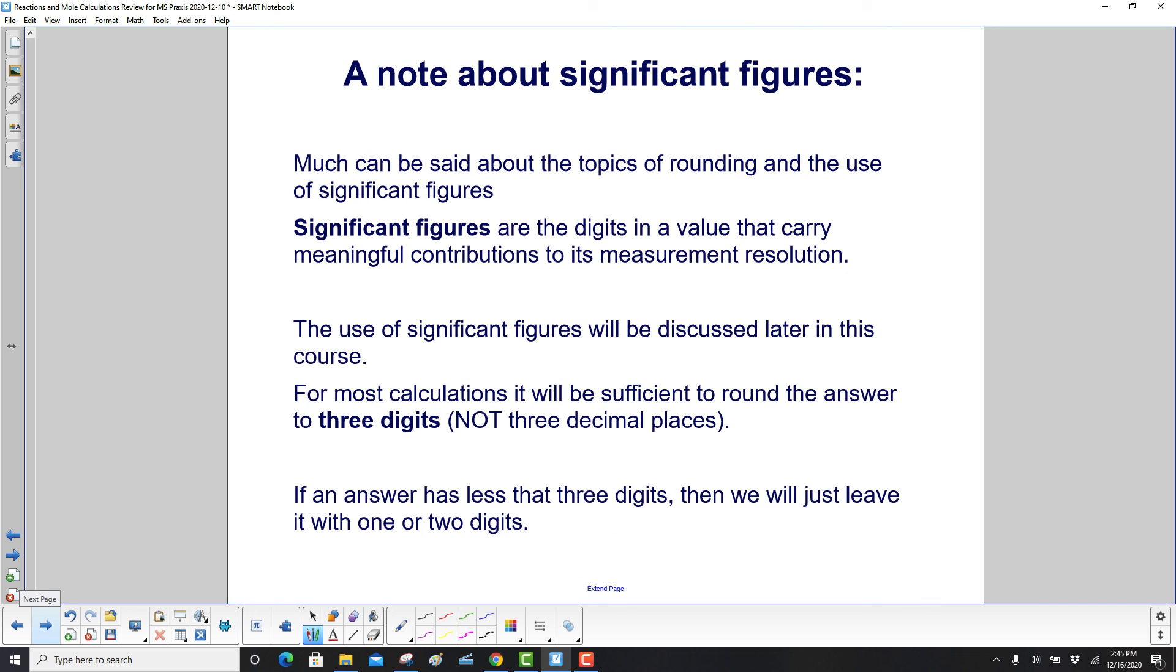Much can be said about the topics of rounding and the use of significant figures. Significant figures are the digits in a value that carry meaningful contributions to its measurement resolution. The use of sig figs will be discussed later in this course. For most calculations, it will be sufficient to round the answer to three digits, not three decimal places. If an answer has less than three digits, then we'll just leave it with one or two digits.